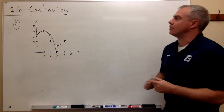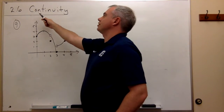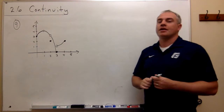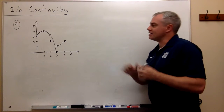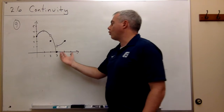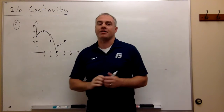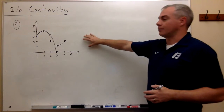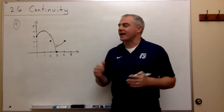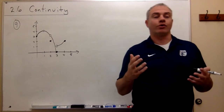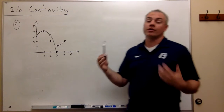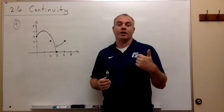Welcome back. In this video we're going to be looking at section 2.6 on continuity. We're going to start with number nine. Number nine is asking us to figure out at what x values does this function that I've drawn on the board have discontinuities, and which of the rules for continuity has it violated? The rules of continuity are: